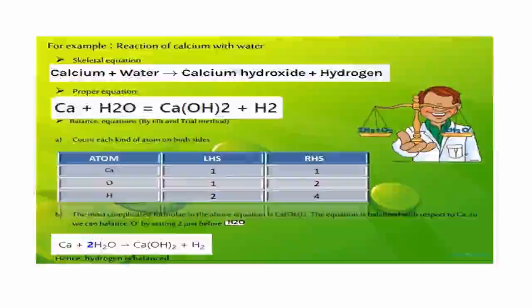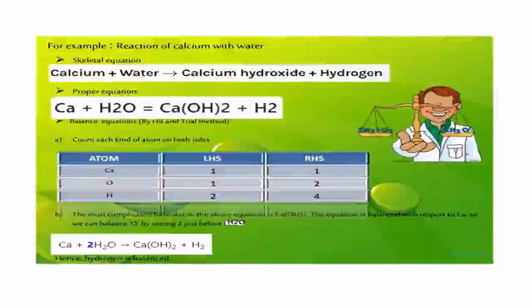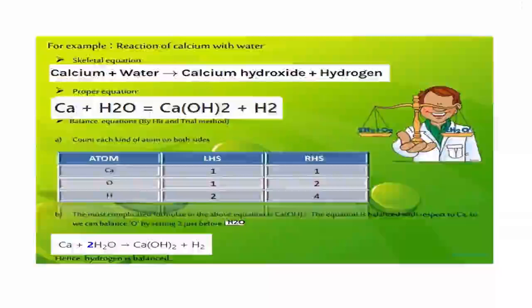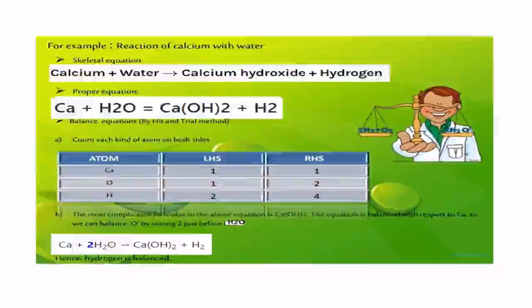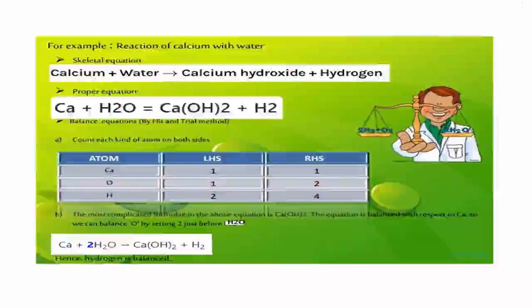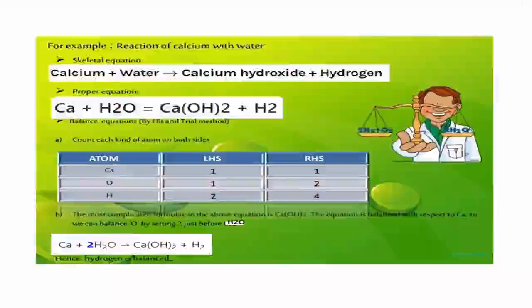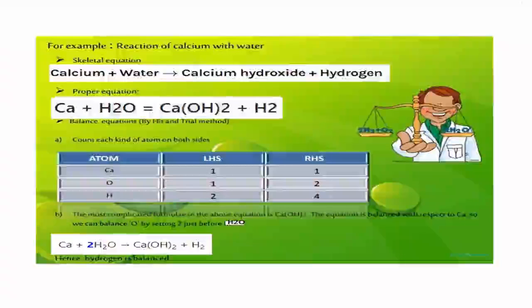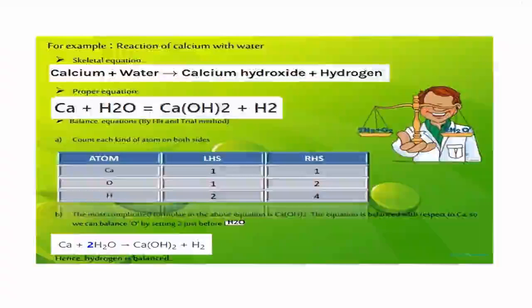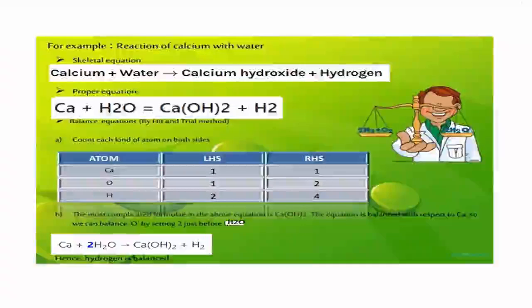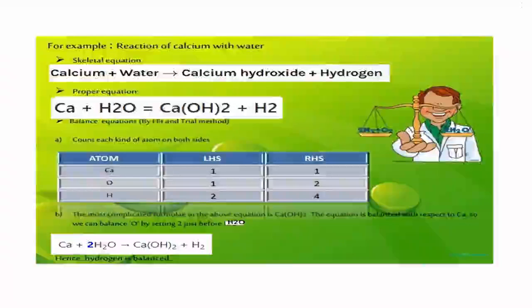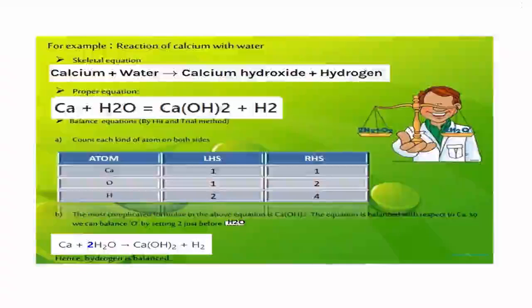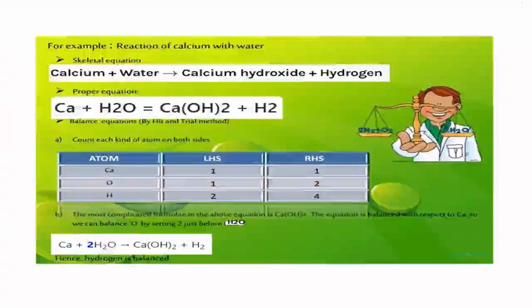Let us balance the chemical equation. Reaction of calcium with water: skeletal equation is Ca + H2O gives Ca(OH)2 + H2. Balance the equation by writing both the atoms present in the left-hand side (LHS) and right-hand side (RHS) in two columns. The atoms present here are calcium, oxygen, and hydrogen. Initially, LHS: 1 calcium, RHS: 1 calcium.